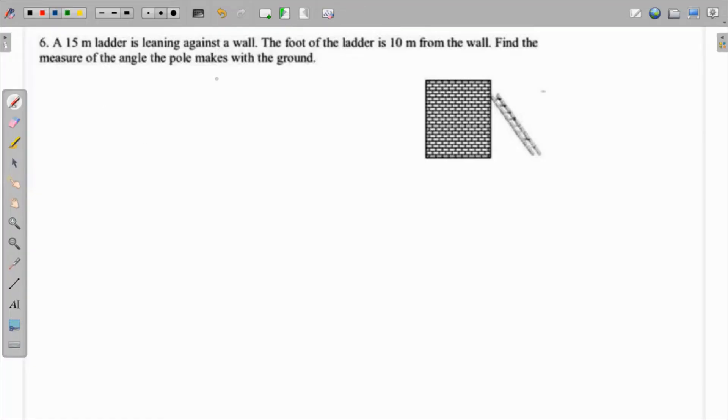The question is: a 15 meter ladder is leaning against a wall and the foot of the ladder is 10 meters from the wall. So the foot of the ladder is 10 meters from the wall, which means this is 10 meters, and the 15 meter is the ladder itself.